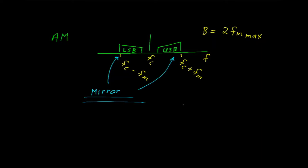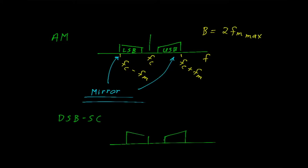Closely related to AM is the double sideband suppressed carrier signal. It has a similar spectrum to AM, except it's missing the carrier. So the double sideband suppressed carrier has the lower sideband and the upper sideband, but there is no carrier. Like AM, the bandwidth is 2 times the maximum frequency used to modulate the signal.